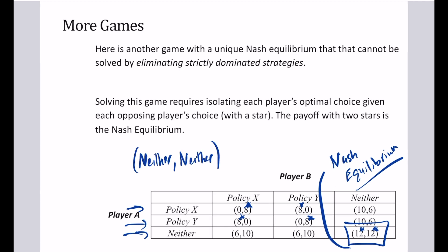The equilibrium strategy set is both choosing neither, with payoffs of 12 and 12. You can verify this is a Nash equilibrium: if player B is choosing neither and doesn't change, player A would not want to deviate. And if player A is choosing neither, player B would not want to change either. But for every other possible outcome — policy X or policy Y — one or both players would want to deviate if the other kept their strategy. So there is only one Nash equilibrium in this game.